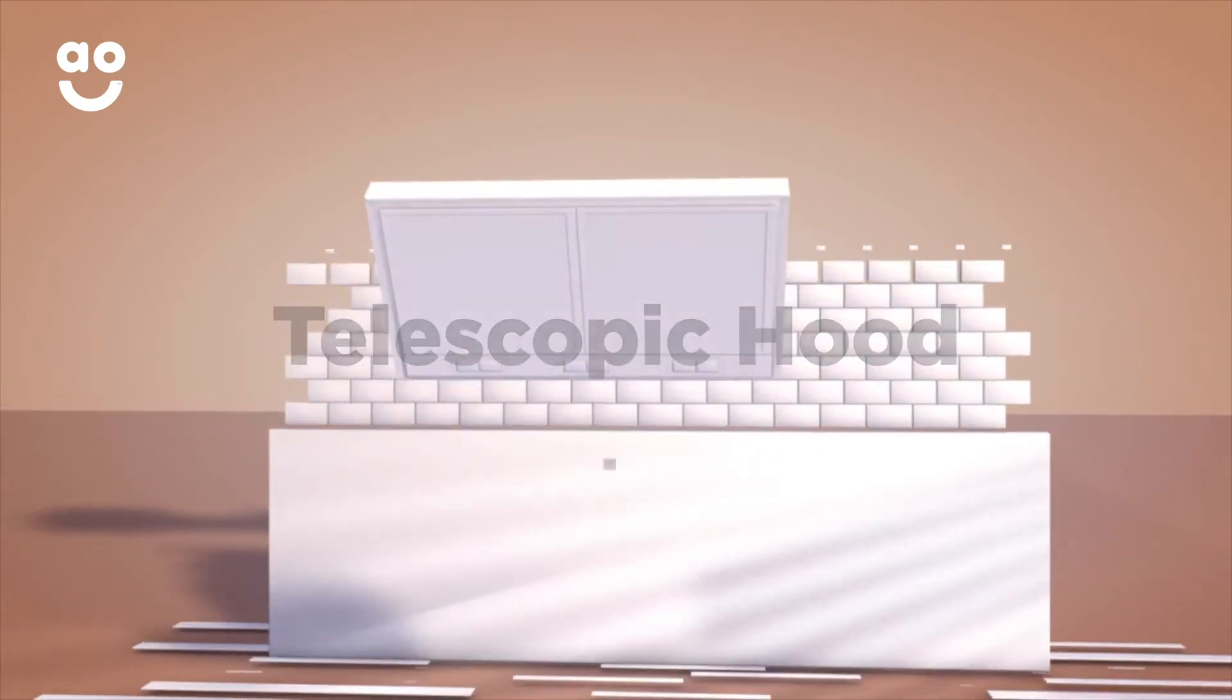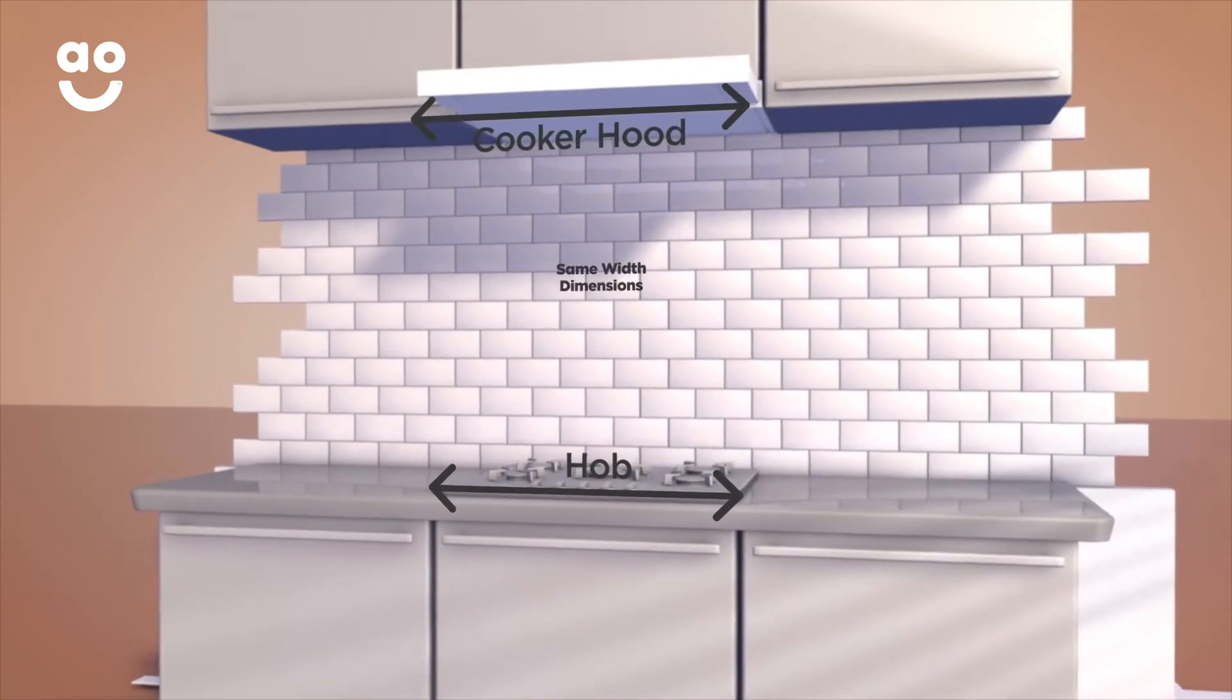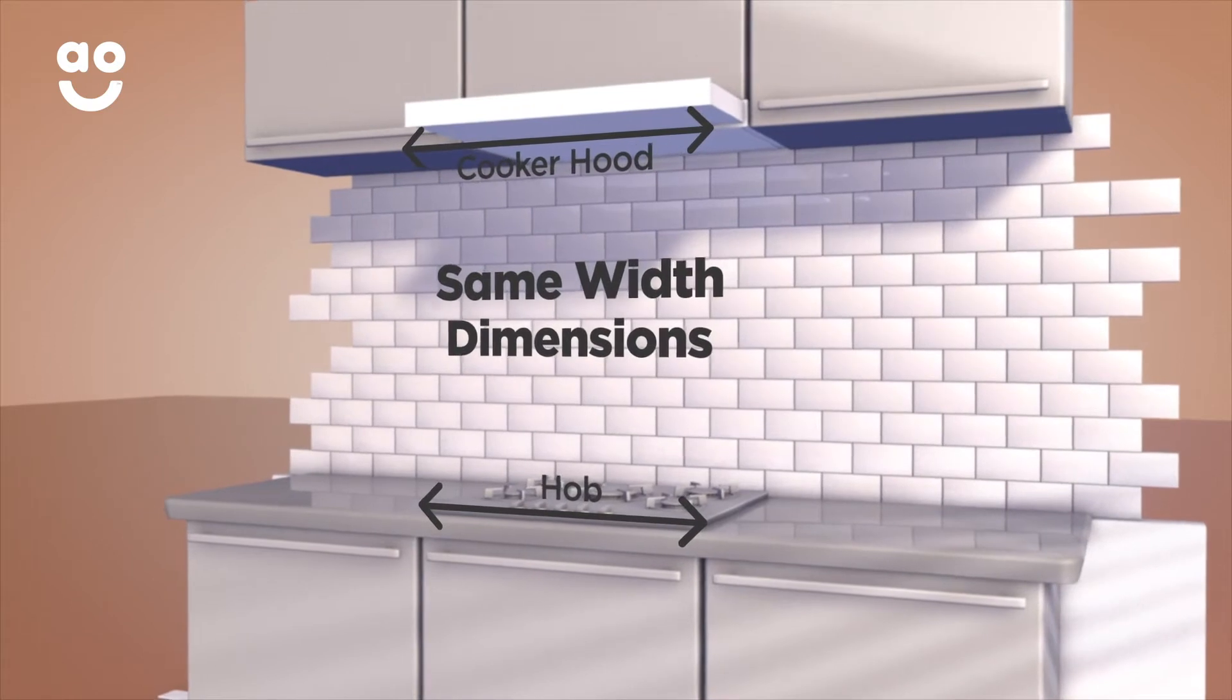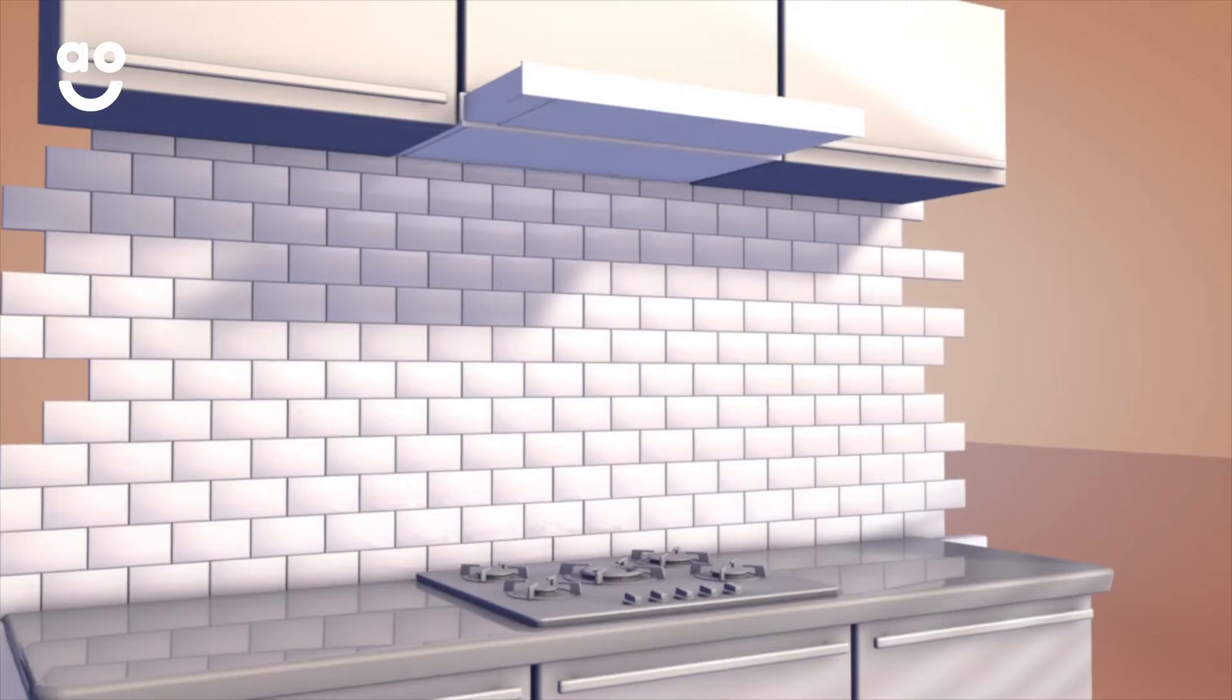If you're measuring a new telescopic hood, you will need to make sure that your hob has the same width dimensions to get the best performance. It's also worth noting that the larger your kitchen, the larger the hood will need to be to effectively clear the air of cooking smells and grease.